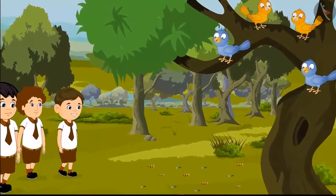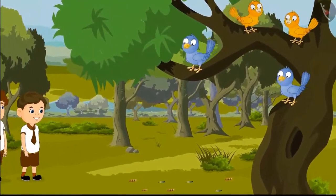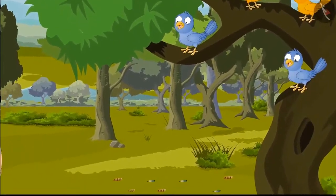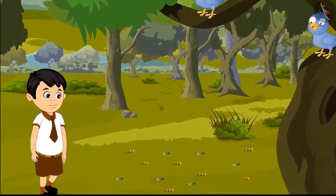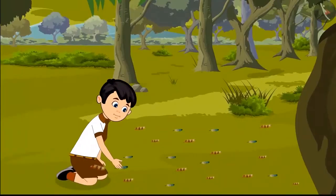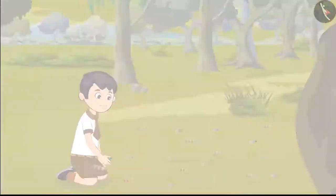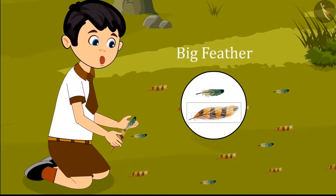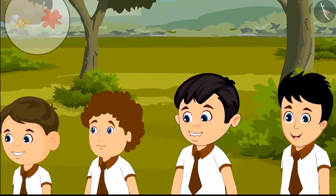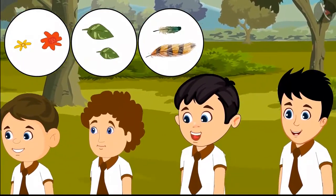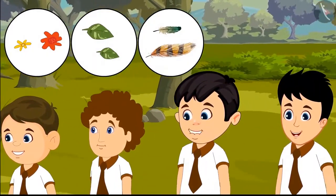While walking, Chotu found a tree on which a lot of birds were sitting. Under that tree were a lot of fallen feathers. Chotu thought to pick two feathers from them, saying, 'I will take one small feather and one big feather.' Oh wow! I got flowers, leaves, and bird feathers. Now I will go home and stick them in my notebook.